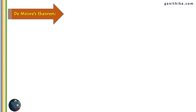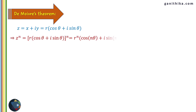De Moivre's theorem: if a complex number is expressed in Cartesian form as x + iy, it can be converted to polar form as r(cosθ + i sinθ). Then, raising that complex number to a power of n gives r^n(cos nθ + i sin nθ). This is the statement of the theorem.